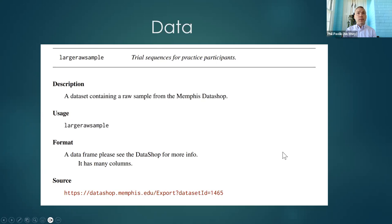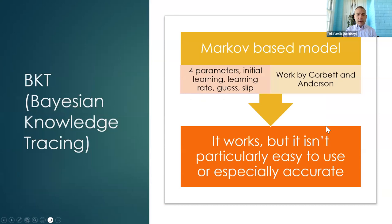When talking about student models, we often start with Bayesian Knowledge Tracing because it's been around so long. There's the well-known Corbett and Anderson paper that talks about how it's used. The history of Bayesian Knowledge Tracing goes back to the 60s and got formalized in that Corbett and Anderson paper. It's been used in Carnegie Learning cognitive tutors and in many other applications.